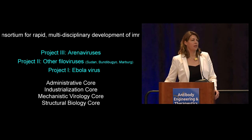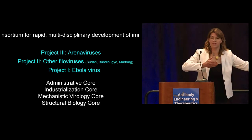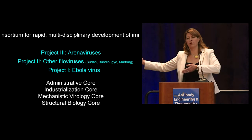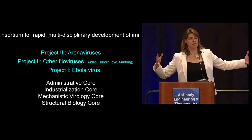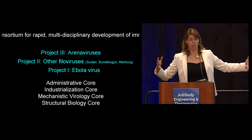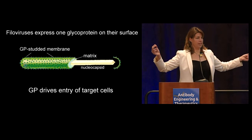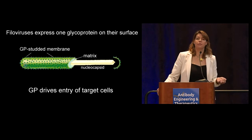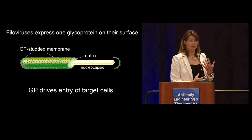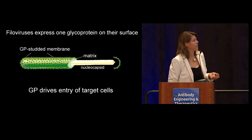Ebola belongs to the family of filoviruses. Within filoviruses, there's a genus of Ebola viruses and a genus of Marburg viruses. Within the Ebola virus genus there are five different viruses, only one of which is actually called Ebola virus. All of these viruses are long filamentous particles with only one molecule on their surface — a glycoprotein called GP — which is the only protein they use to attach to and drive themselves into host cells. So GP is the target of antibodies that would inactivate the virus.